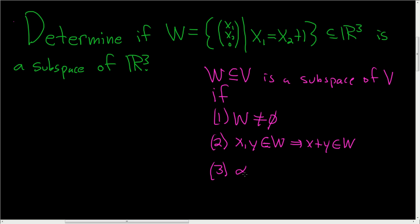And three, given any scalar in a field, usually this is the set of real numbers, so given any real number and any vector X in W, if we look at the new vector, alpha X, this is also in W. This is called scalar multiplication.